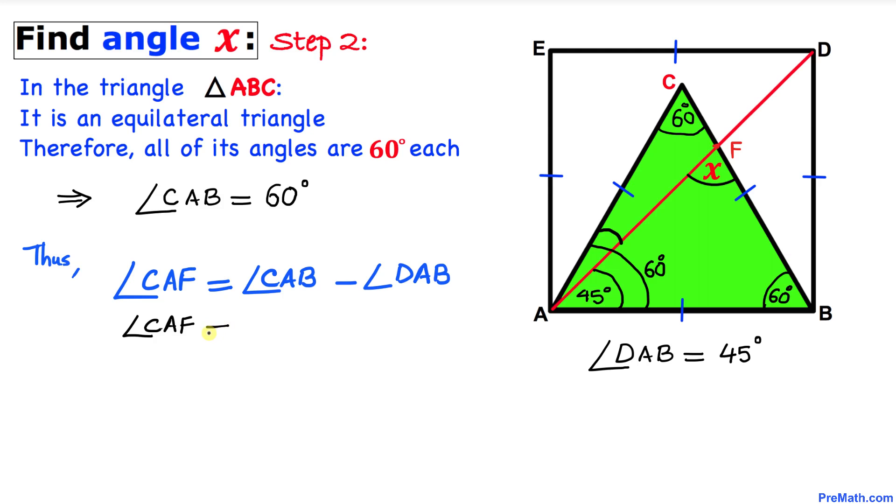Angle CAF is going to be, we know that angle CAB is 60 degrees. I'm going to write down 60 degrees, take away this angle DAB which is 45 degrees. I wrote it down over here. So therefore our angle CAF turns out to be 60 minus 45, which is simply 15 degrees.